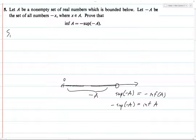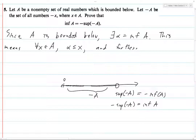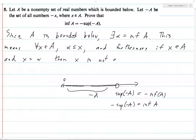Since A is bounded below, its infimum exists. So there exists some alpha which is the infimum of A. This means that, first, since it's a lower bound, for all x in A, alpha is less than or equal to x. Furthermore, the fact that it's the infimum means that if x is in A and x is greater than alpha, then x is not a lower bound for A.